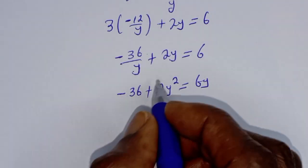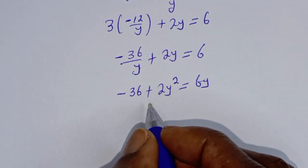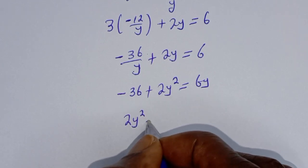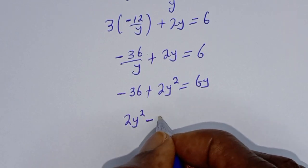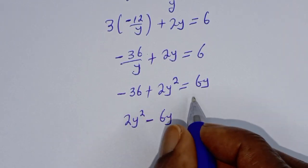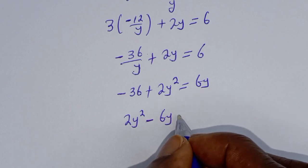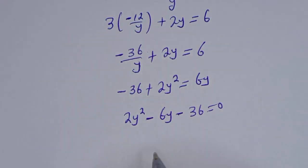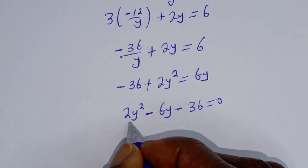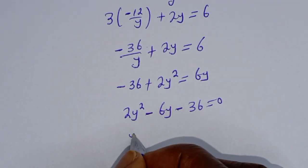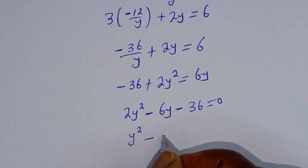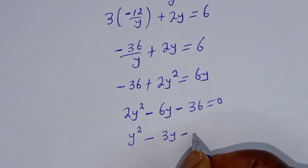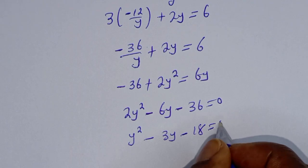Let's rearrange. This is 2y² - 6y - 36 = 0. We can divide all through by 2, giving y² - 3y - 18 = 0.